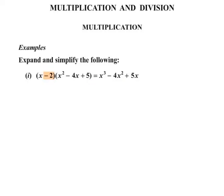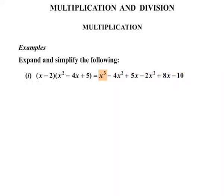Let's move on to the minus 2, multiplying by each of the terms in the next bracket. So minus 2 times x squared, minus 2 times minus 4x, then minus 2 times positive 5. Then we need to collect like terms. So we've got x cubed — there are no other cubes. In terms of x squared, we've got minus 4x squared minus another 2x squared, giving minus 6x squared. We've got plus 5x plus 8x, and finally minus 10 on the end.